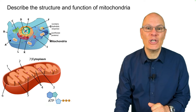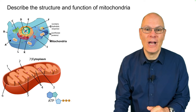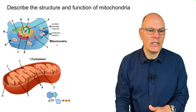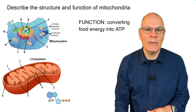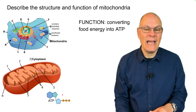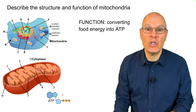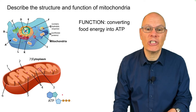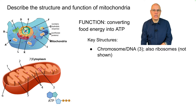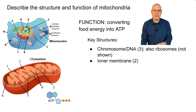Mitochondria are shown here in the context of an animal cell. The function is converting food energy into ATP — that's the molecule that cells use to get work done. There's a chromosome that consists of DNA. There are also ribosomes, which aren't shown in this diagram. Evidence of endosymbiosis.